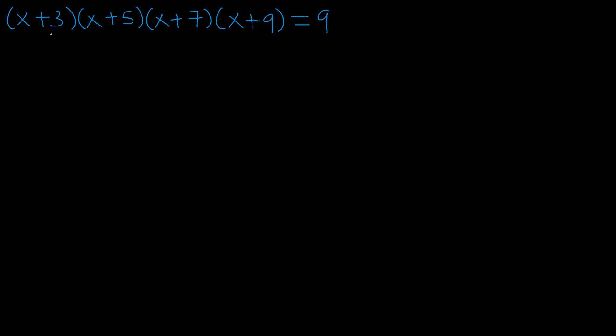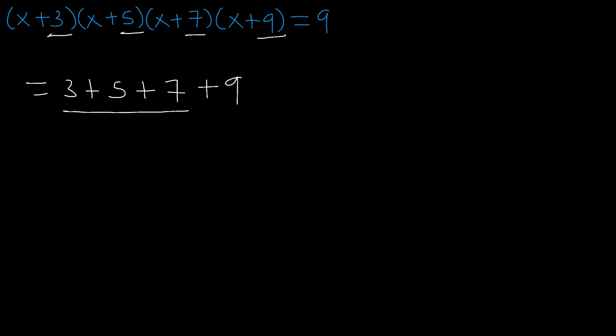If you look at the numbers, we have 3, 5, 7, and 9. You will notice that these numbers have a difference of 2 in between them. So what we need to do is take the average of these numbers. So we shall have 3 plus 5 plus 7 plus 9, and we shall divide this by 4. If you add this up, you will get 24 divided by 4, and this will give us 6.